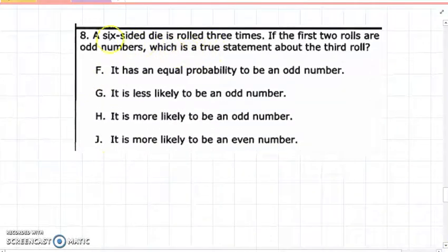Eight: A six-sided die is rolled three times. Okay, the first two rolls are odd numbers. Which is a true statement about the third roll? Okay, think about a die has six sides. Just because you rolled it two times, the first two times, does it change the outcome? Okay, think about how many odds are there, think about how many evens are there. Okay, on a six-sided die it's one, two, three, four, five, six. How many odds, how many are evens? Okay, you know the odds are one, three, five. The evens are two, four, six. And so think there, okay, is it equal, is it less likely, more likely, or more likely again? Okay, think about that.